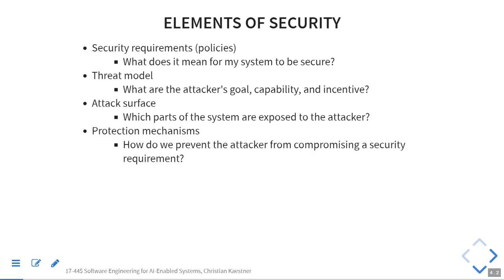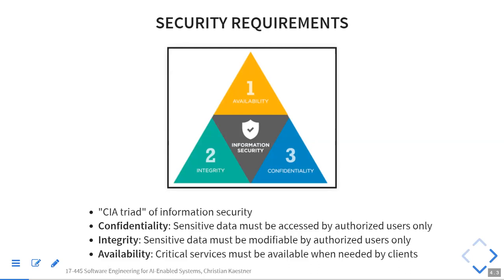When we talk about security, there are several elements: security requirements and goals, what the attacker can do, their capabilities and incentives, what parts of the system are exposed, and how we protect it. There are also key security properties. This list talks about confidentiality, integrity, and availability. Confidentiality means you don't leak sensitive data — only people who are supposed to access something can access it. Integrity means nobody who isn't allowed to can manipulate the data.